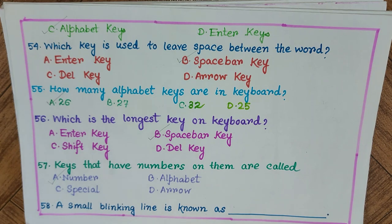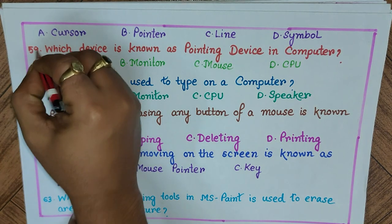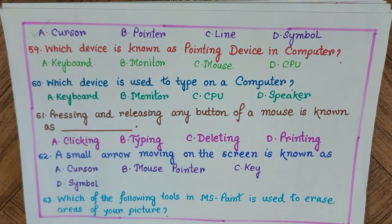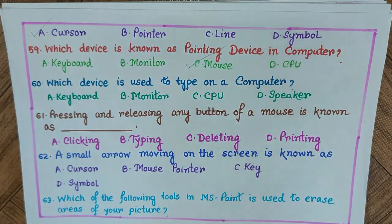Question 58: A small blinking line is known as — options are on the next page — A) cursor, B) pointer, C) line, D) symbol. The answer is A) cursor. Question 59: Which device is known as the pointing device in a computer? A) keyboard, B) monitor, C) mouse, D) CPU. The answer is C) mouse.